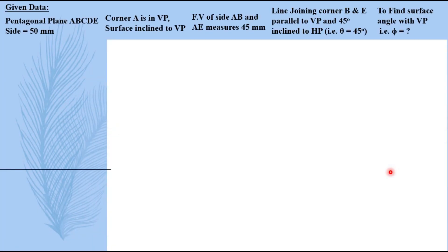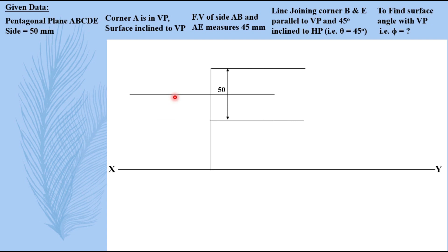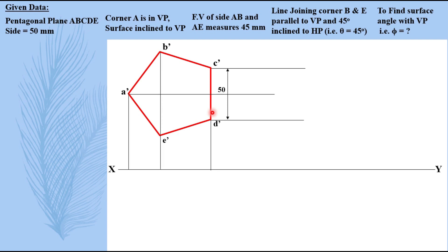Let us draw the actual 2D solution now, taking the XY line at some distance. I suggest you take at least 50mm or more, then draw a projector. I am drawing the pentagon from right towards left, as drawing from the left side is more time consuming. Keep this distance at least 1.5 times or more than the given dimension — here it is 50mm, so take more than 75mm. Take 25mm on each side and complete the pentagon. Name it, take projectors down, complete the top view, and name the corresponding points.